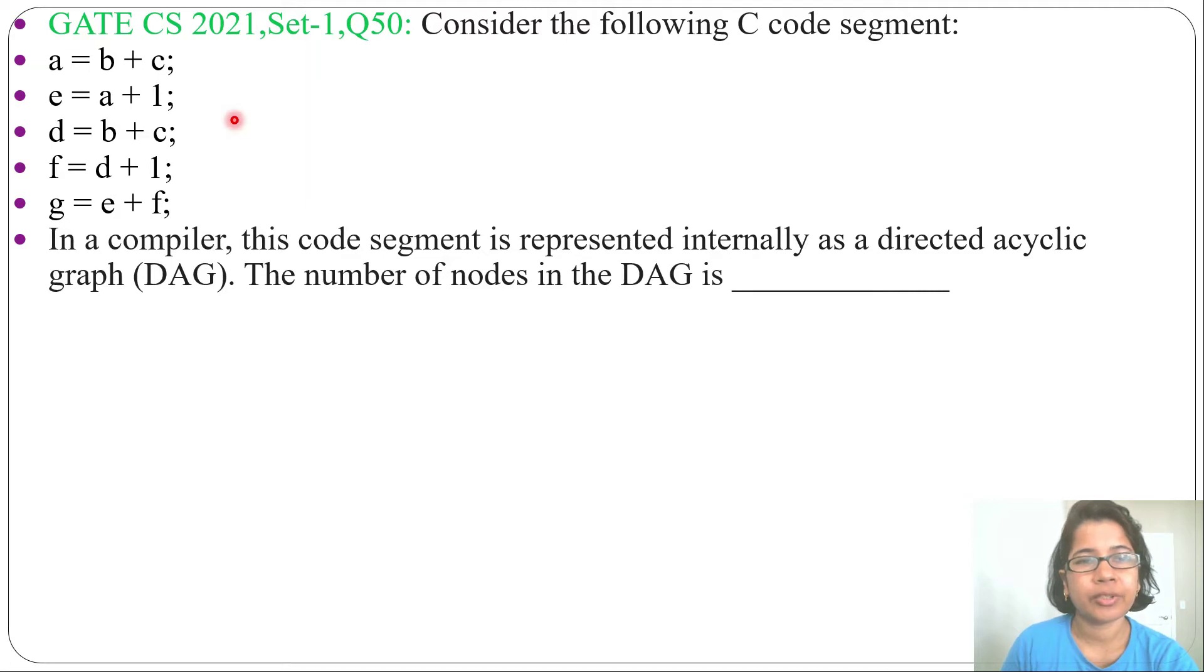Hi, let's solve one previous question of DAG compiler. This question was asked in GATE CS 2021, Set 1, Question Number 50. Consider the following C code segment. In a compiler, this code segment is represented internally as a directed acyclic graph (DAG). The number of nodes in the DAG is blank.